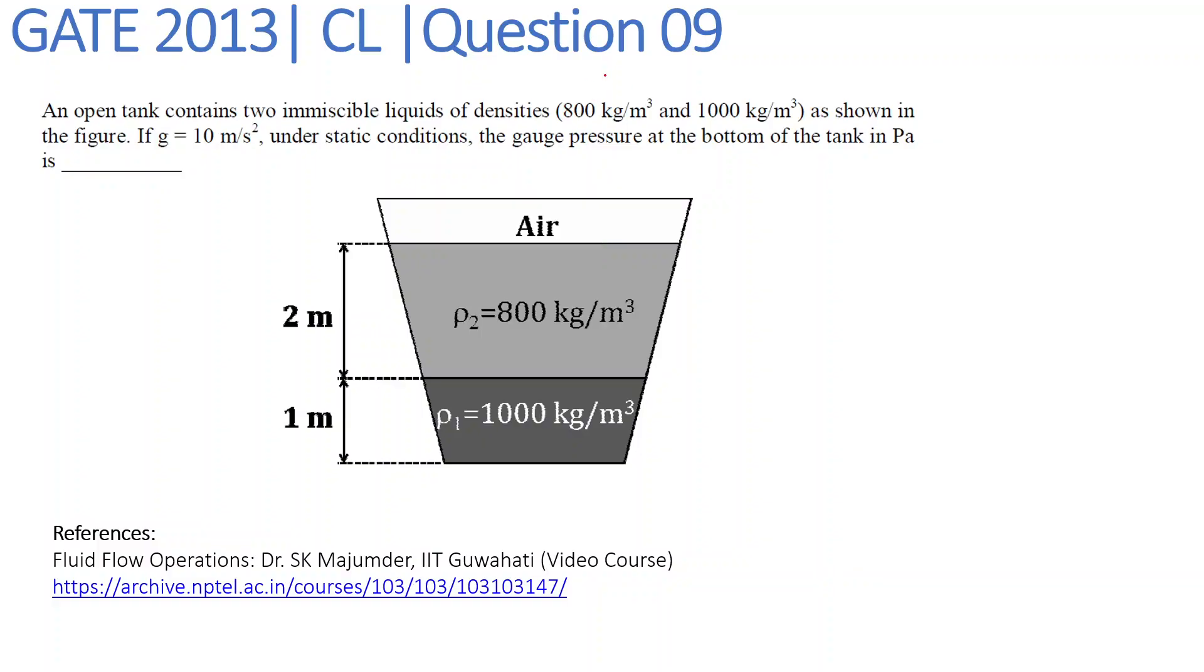Hello everyone, we are solving question number nine of GATE 2013. The question is: an open tank contains two immiscible liquids, density 800 kg per meter cube and 1000 kg per meter cube as shown in the figure. If g is equal to 10 meter per second square under static condition, the gauge pressure at the bottom of the tank in pascal is?